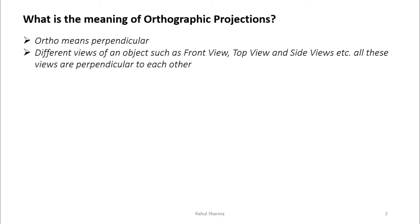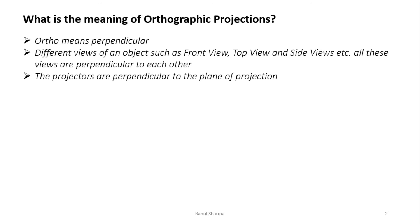The third reason why it is known as orthographic projection is that the projectors are perpendicular to the plane of projection. Projectors are the projection lines — when you draw a front view or top view, the observer sees the object and imaginary lines fall on the plane of projection, on HP or VP, and those lines are perpendicular to HP or VP.